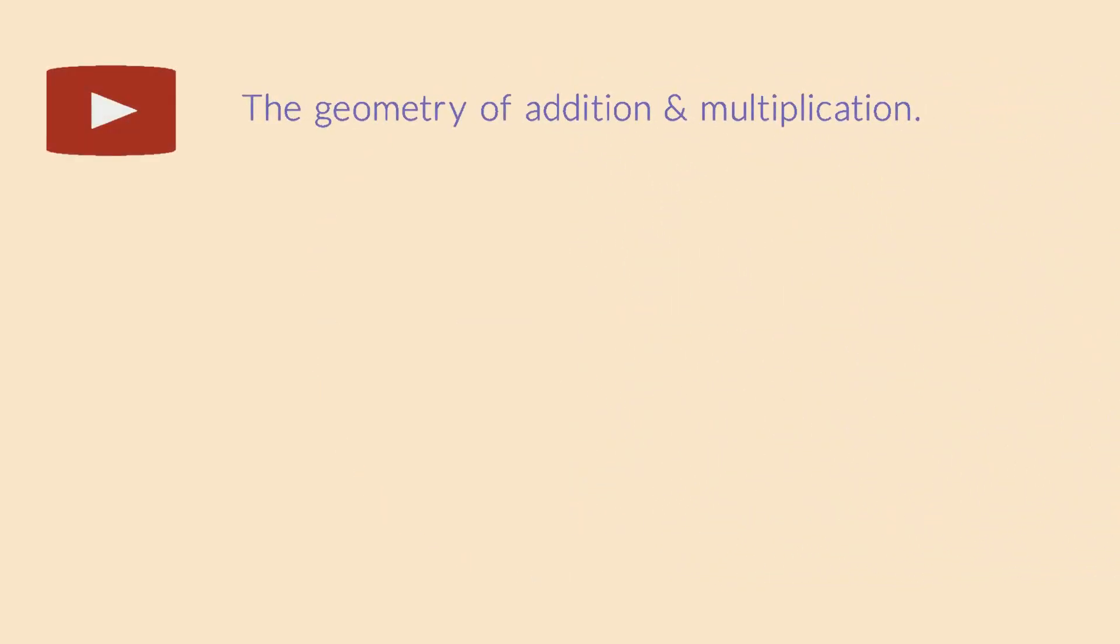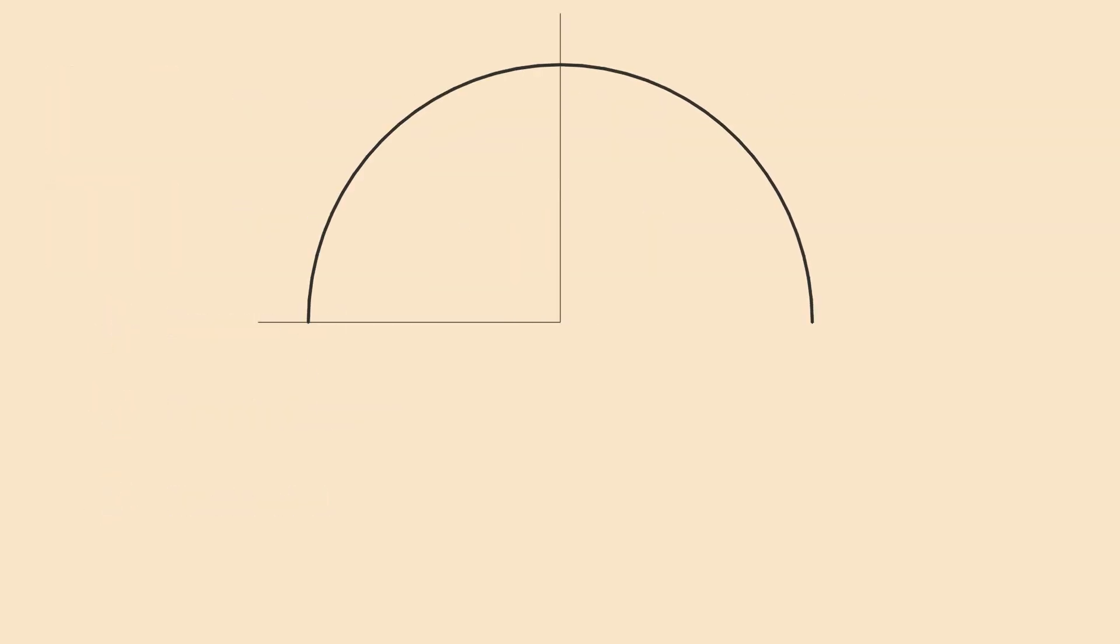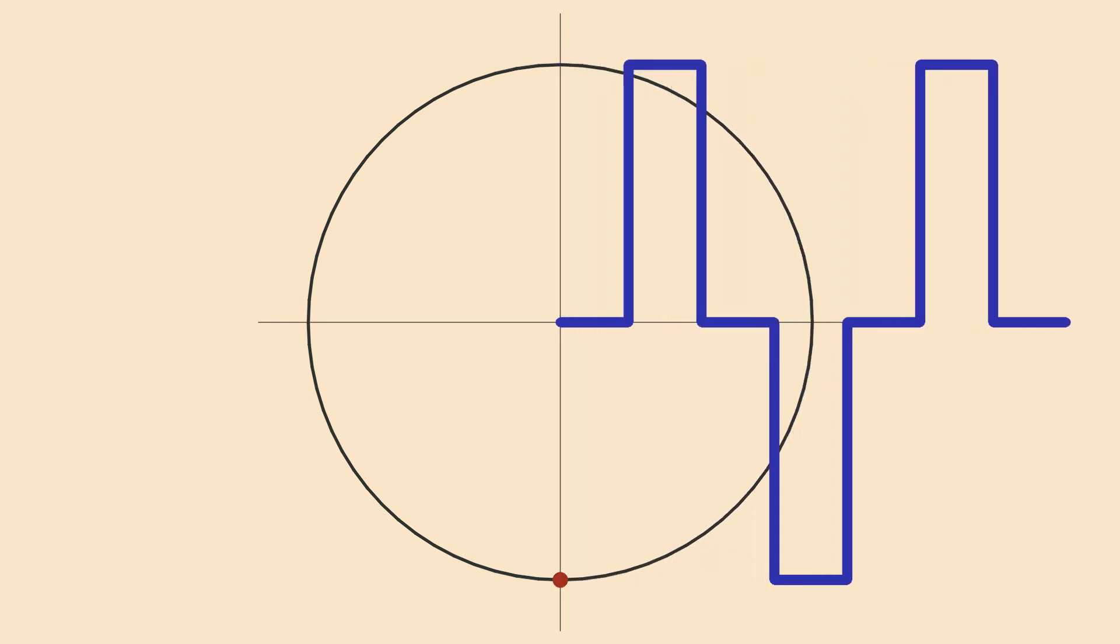Last time we already looked at the geometry of addition and multiplication in the complex plane. In this video I want to look at powers and roots. We already saw that multiplication corresponds to rotation. So repeated multiplication should correspond to repeated rotation, allowing us to produce various kinds of discrete and continuous wave patterns.